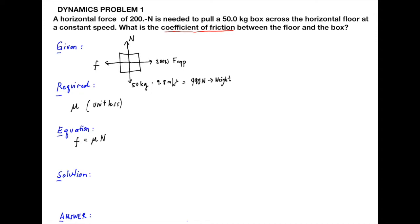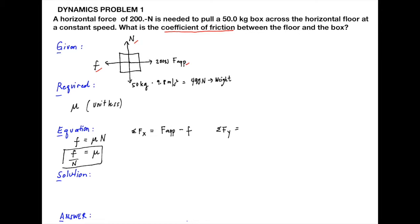Since we are looking for the coefficient of friction, it is the frictional force divided by the normal force. We write the sum of all horizontal forces — the applied force minus the frictional force — and the sum of all vertical forces, which is the normal force minus the weight.